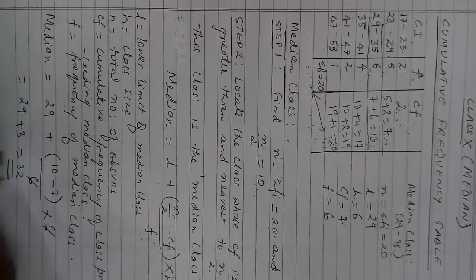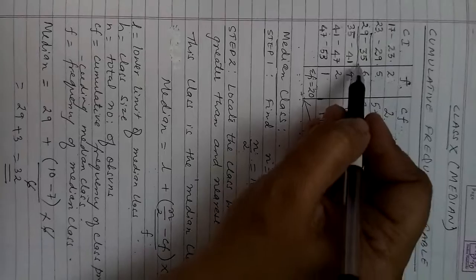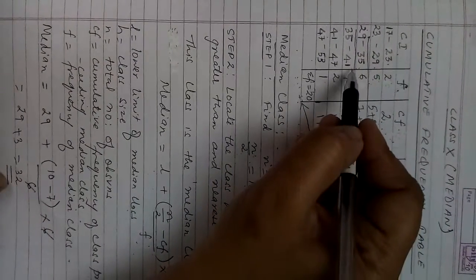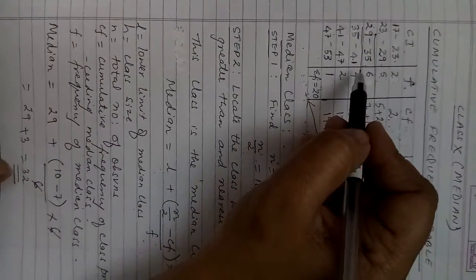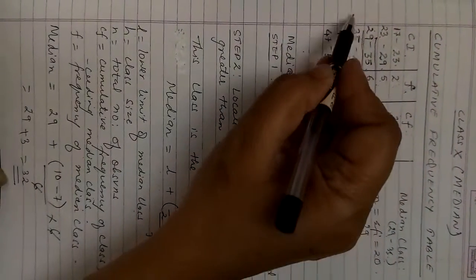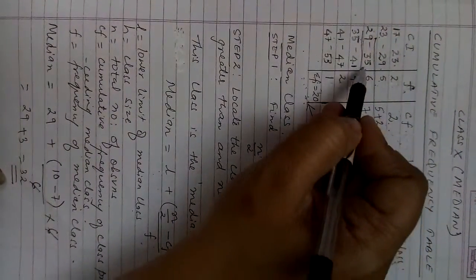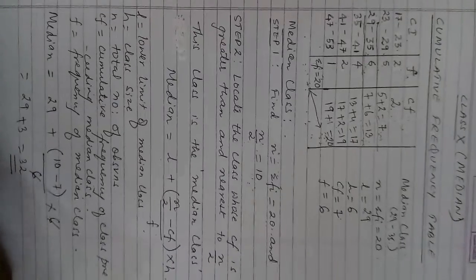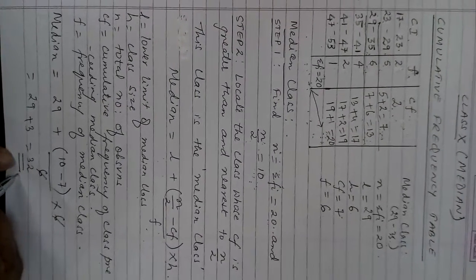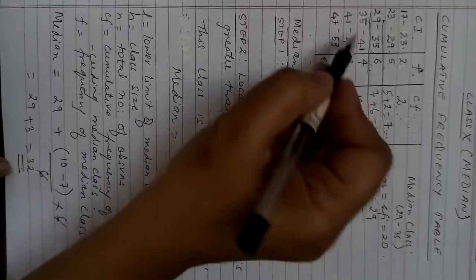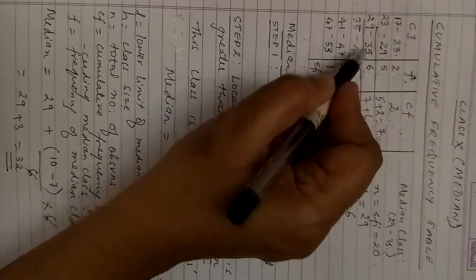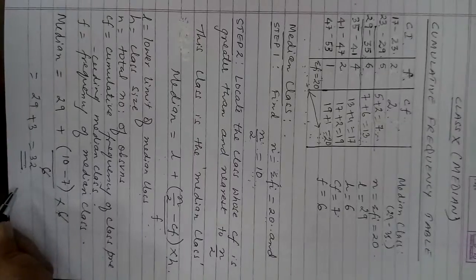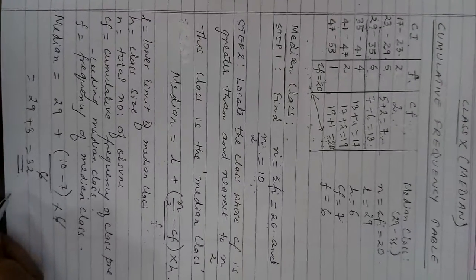As with mode, the median must always lie inside the median class. The median class is 29 to 35, so the result cannot be less than 29 or greater than 35. I got 32, which clearly lies inside the median class, confirming the answer is correct. I hope the entire method of finding the median from grouped data is clear.